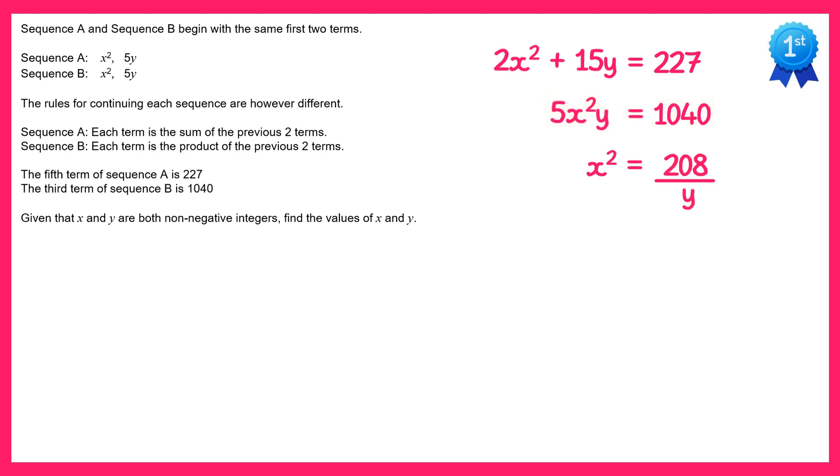I can now substitute x squared in the first equation for 208 over y. So I'm going to write the first equation out again but replace the x squared for that. So it's two lots of x squared, which I now know is 208 over y, plus 15y equals 227.